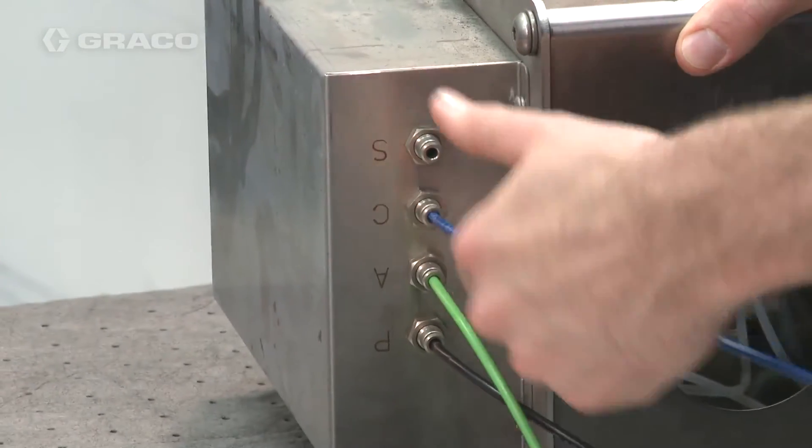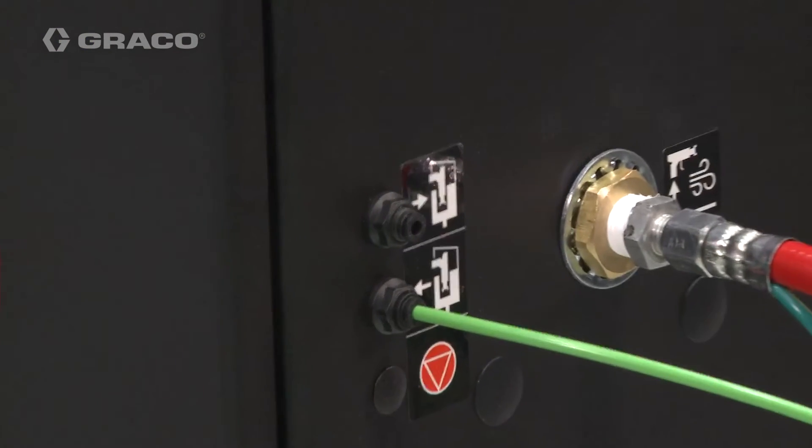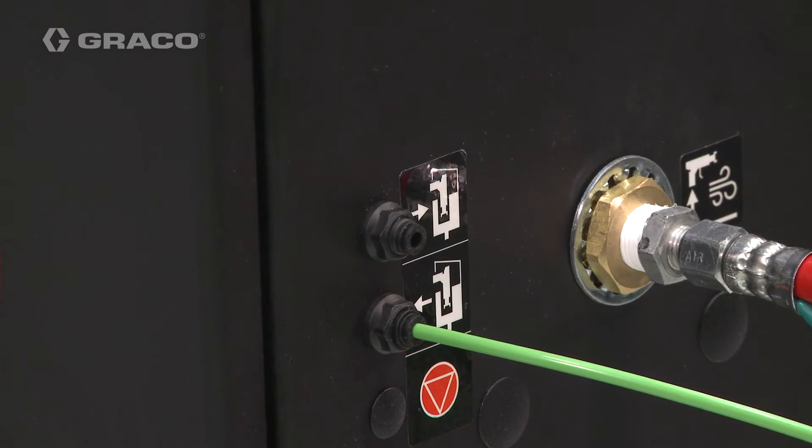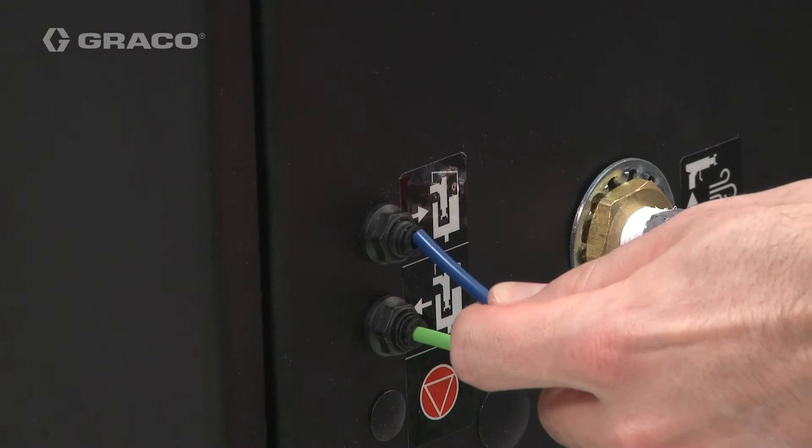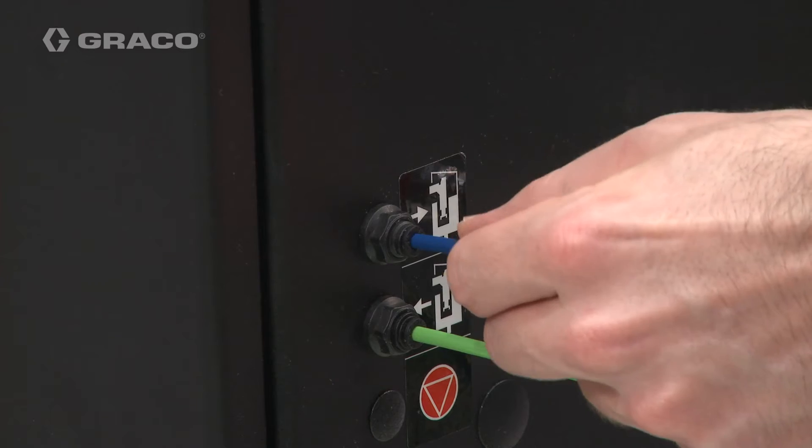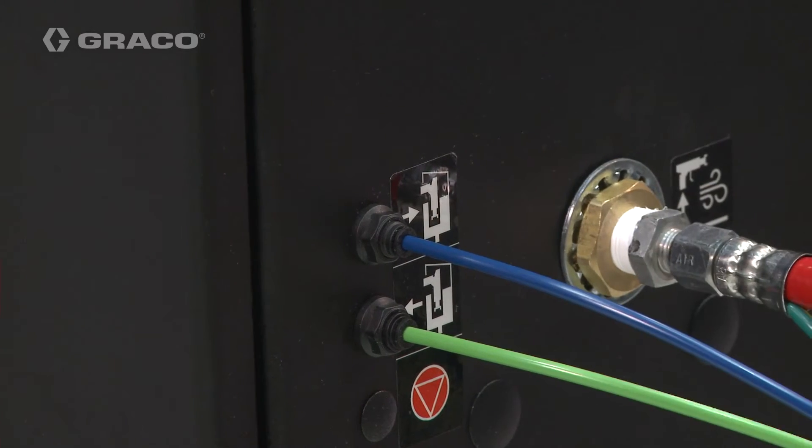Then, connect port C from the gun flush box to the bulkhead connection with this symbol on the isolation cabinet. This is the input air connection that activates the solenoid, which in turn activates the gun trigger in the gun flush box.